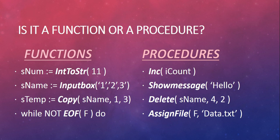ShowMessage - there's nothing in front of ShowMessage because it's not returning anything. It's just doing something: displaying a box to pop up that says hello. Nothing has been sent back - it's just doing it. Delete - there's nothing in front of Delete either. It's taking the variable sName, the string, along with two integer parameters, and just deleting from that string starting at position four for two characters. It changes sName, but it's not returning anything - it's not sending anything back that needs to be stored.